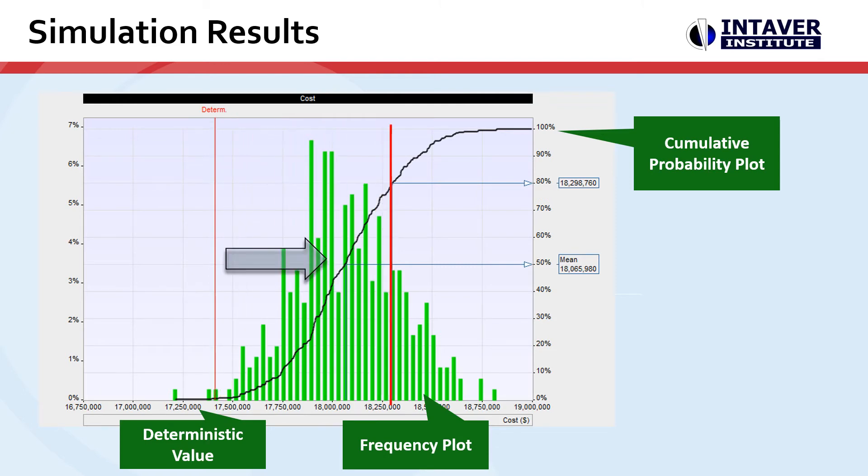Here we can see P50 and P80. P80 is often the confidence level that we will set schedule margin and cost contingency at.